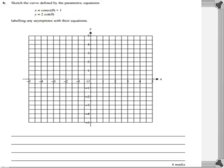Next question. Sketch the curve defined by the parametric equations. Now, what we have to do is label any asymptotes with their equations. From the previous part, we worked out what is the Cartesian form of the equation. And there it is. It's a hyperbola. And from that equation of the hyperbola, I know the center is 1, 0. So the positive 1 from here, and there's no number there, so it has to be a 0 from here. Now, I'm going to plot that point.